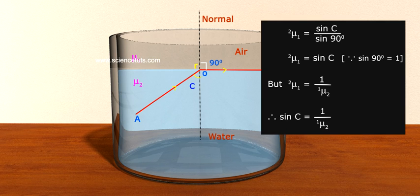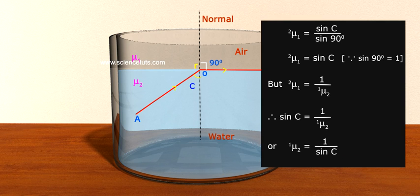Therefore, sin C is equal to 1 by 1 mu 2. Or, 1 mu 2 is equal to 1 by sin C.